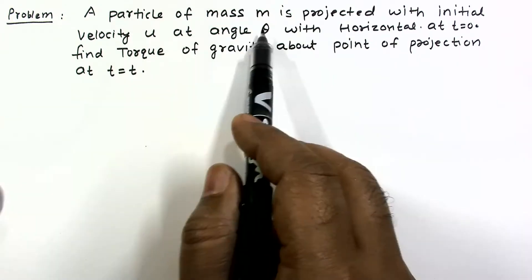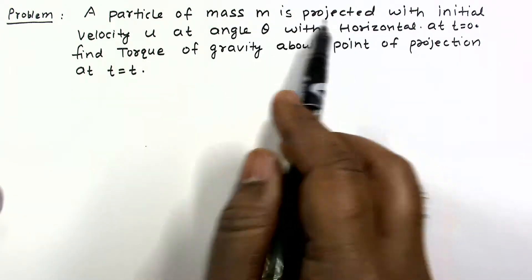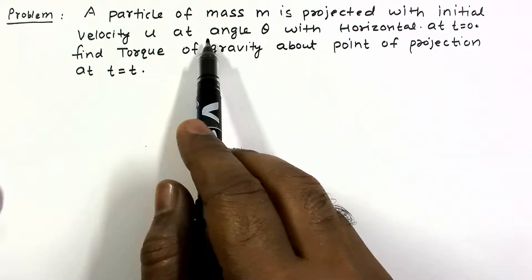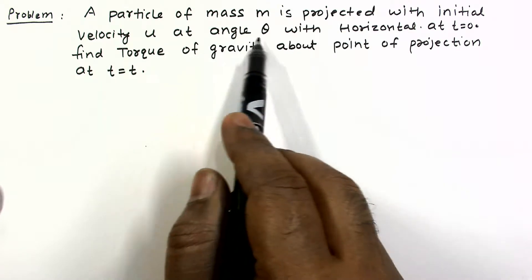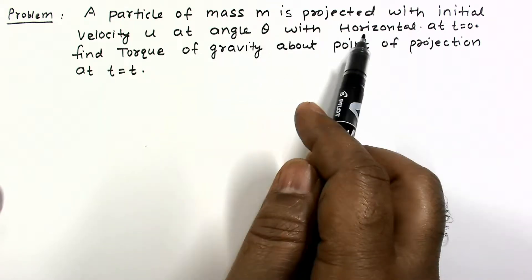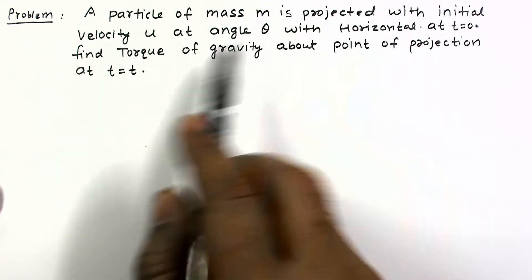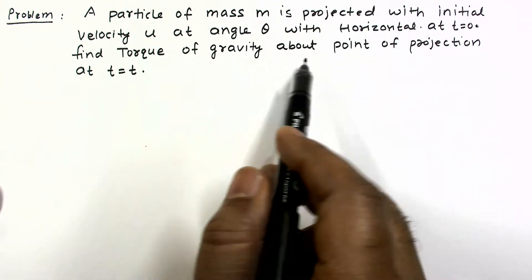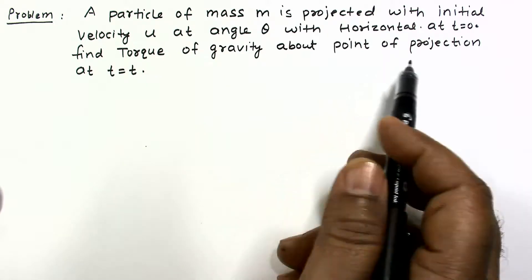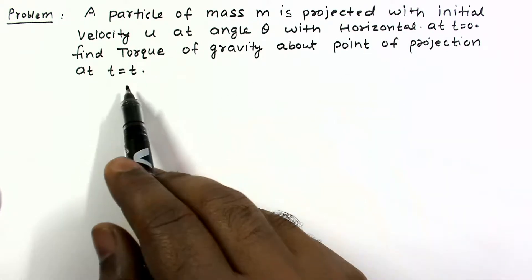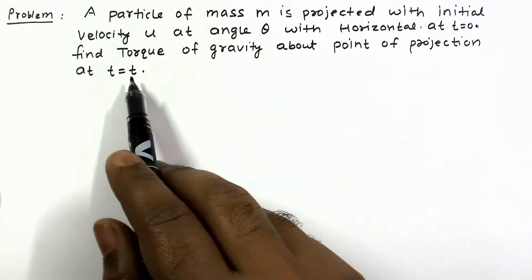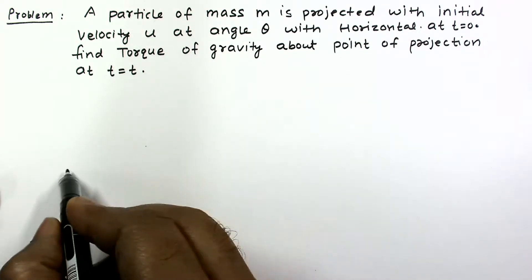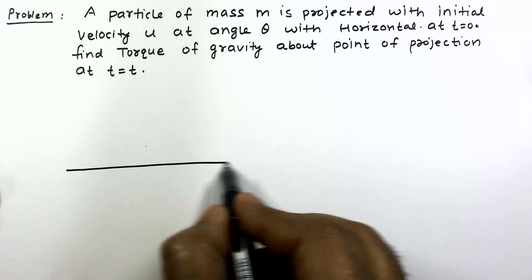In this problem, a particle of mass m is projected with initial velocity u at angle theta with the horizontal at t equals zero. You have to find the torque of gravity about the point of projection at some general time t equals t. So let us draw the situation.